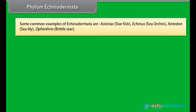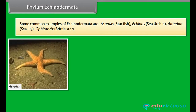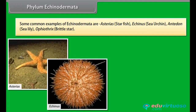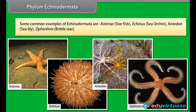Some common examples of Echinodermata are Asterias, starfish, Echinus, sea urchin, Antedon, sea lily, and Ophiothrix, brittle star.